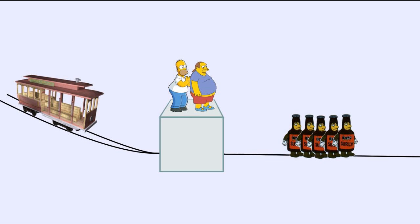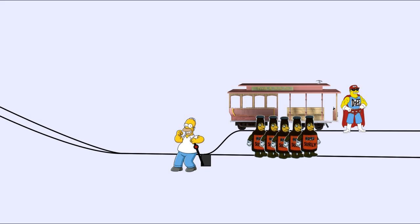Some may say that it is because throwing the switch is less up close and personal than pushing the fat man, but the scenario can be modified so the fat man falls off the bridge at the push of a button, and the typical response will remain the same.